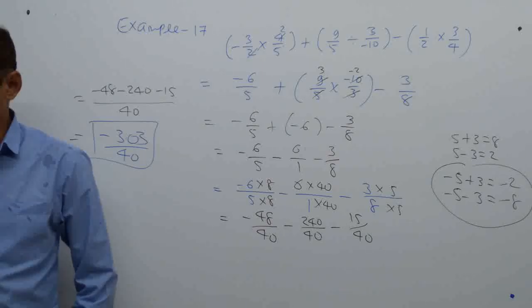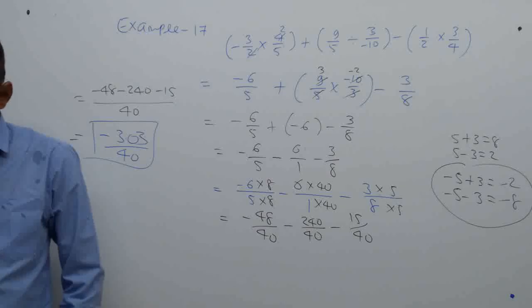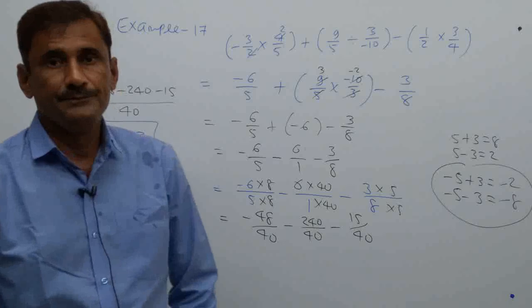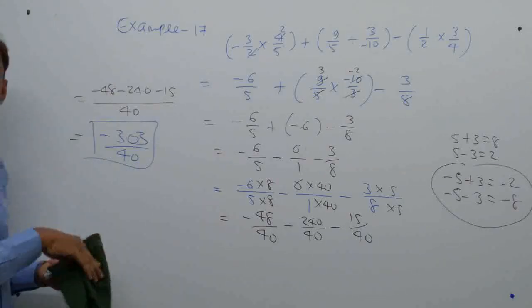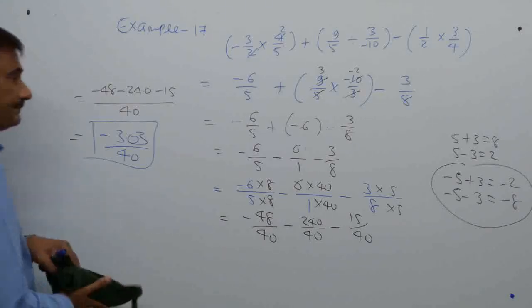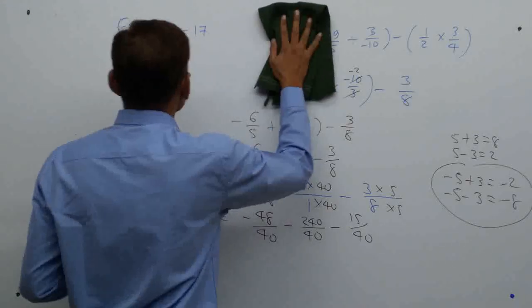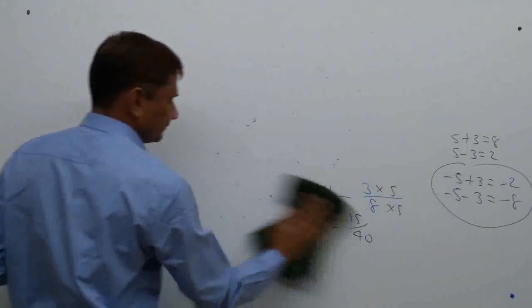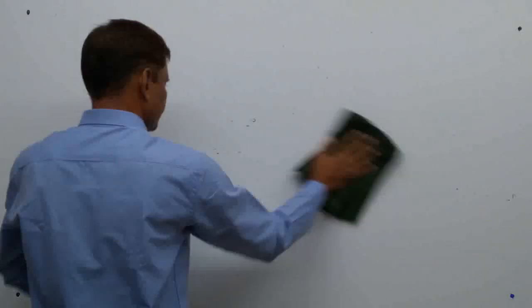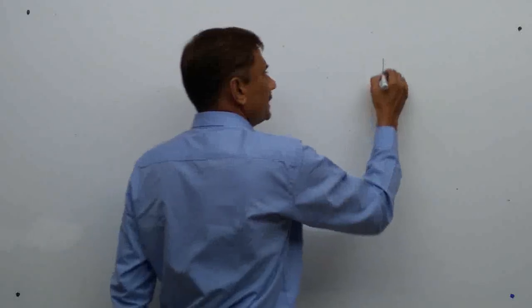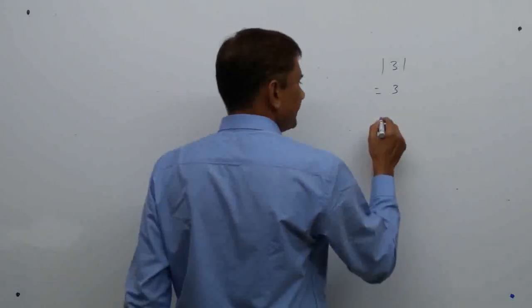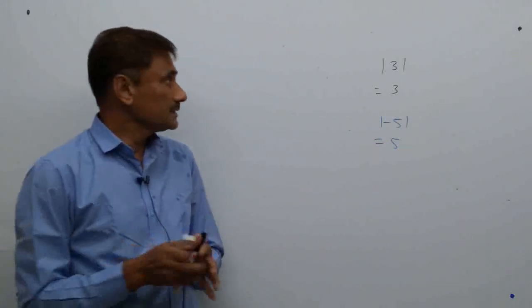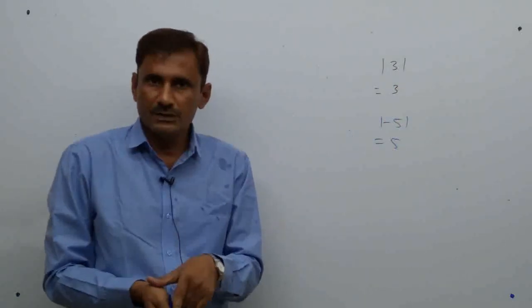Now, what is the absolute value of a rational number? Absolute value means the positive value. If you see two vertical bars around a number, that is the modulus sign. Absolute value of 3 is 3, absolute value of −5 is 5. If a number is positive, it remains positive; if negative, it becomes positive. Absolute value is always positive.